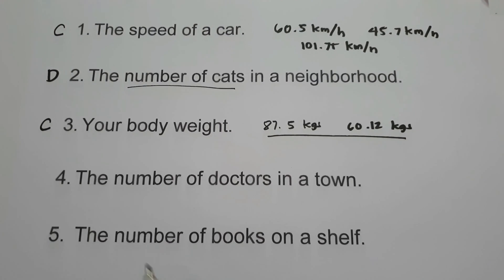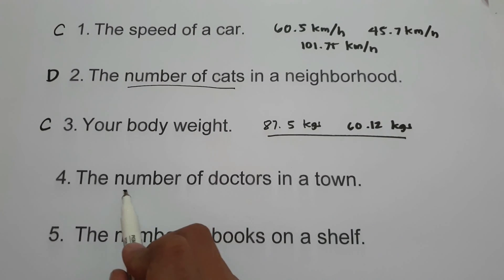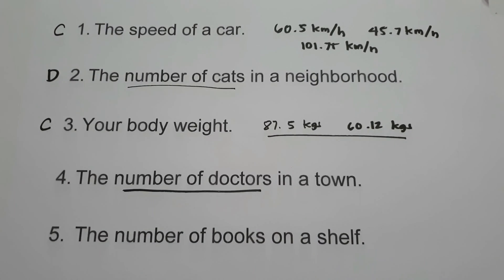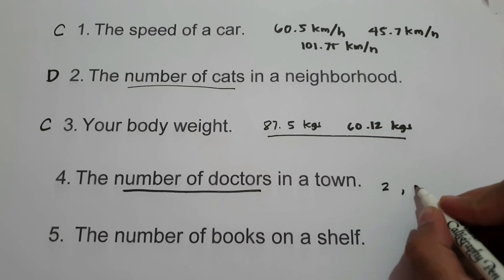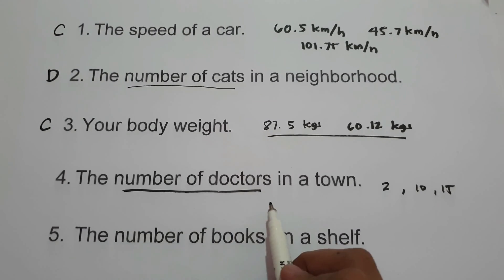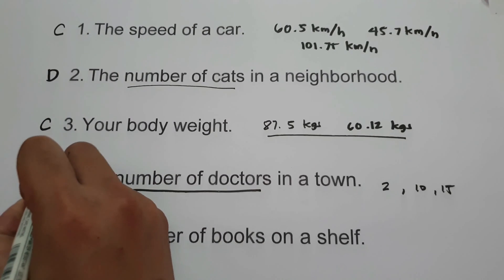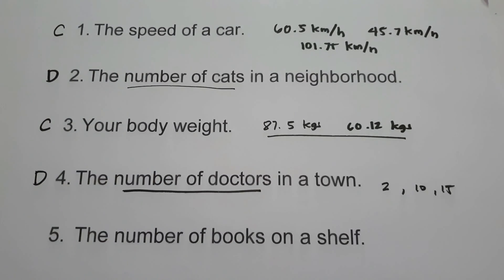On number 4, the number of doctors in a town — how many doctors are in a town? It could be 2, 10, 15, etc. The number of doctors can be counted. Therefore, number 4 is an example of discrete random variable.